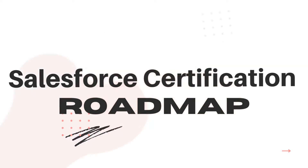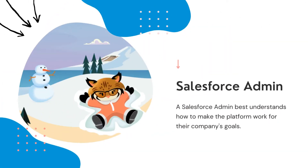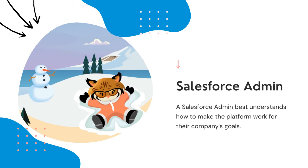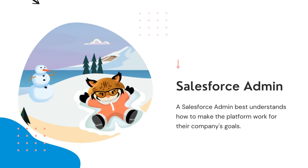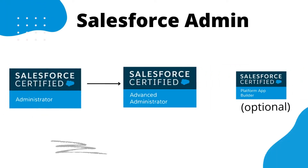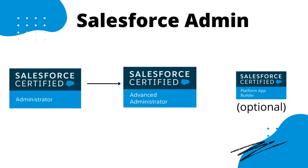The first role in the Salesforce ecosystem is Salesforce Admin. A Salesforce admin is a person who understands how to make the platform work better with different kinds of strategies. If you have a dream to become a Salesforce admin, you first need to go for the Salesforce Administrator certification exam, and after that you can apply for the Salesforce Advanced Administrator exam.